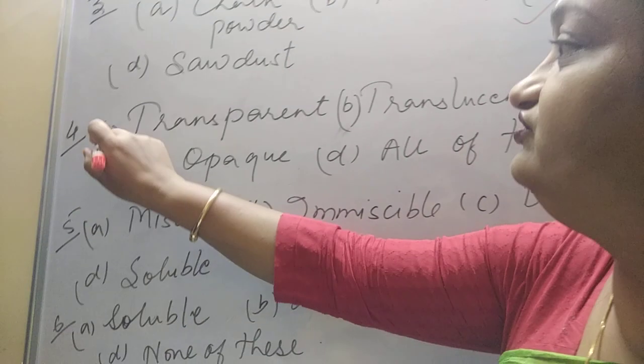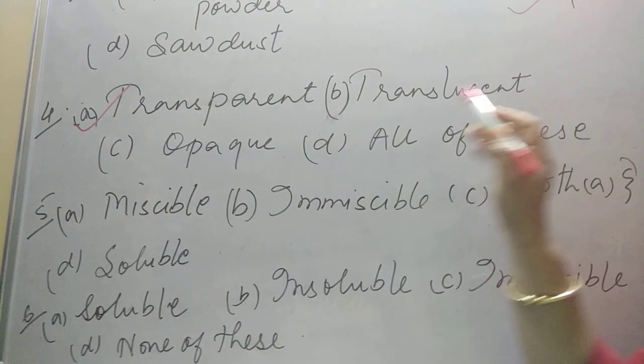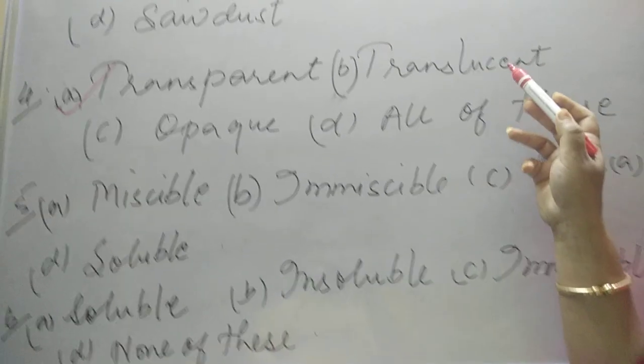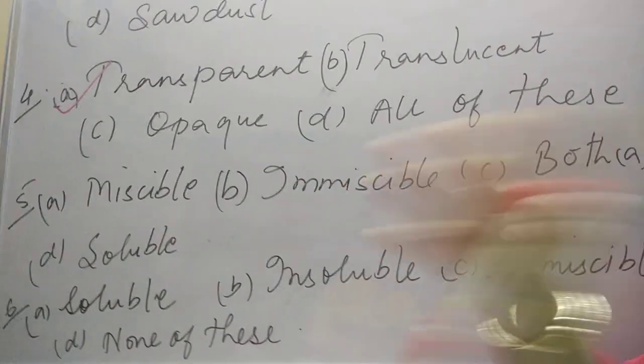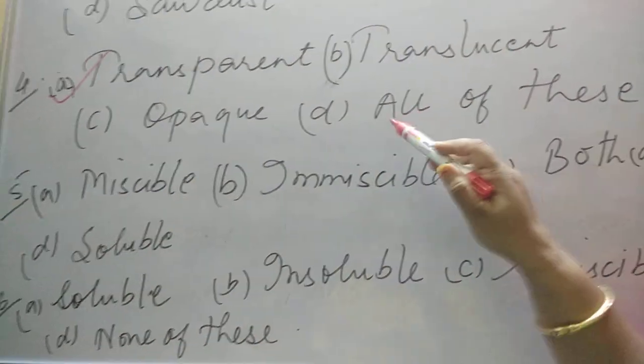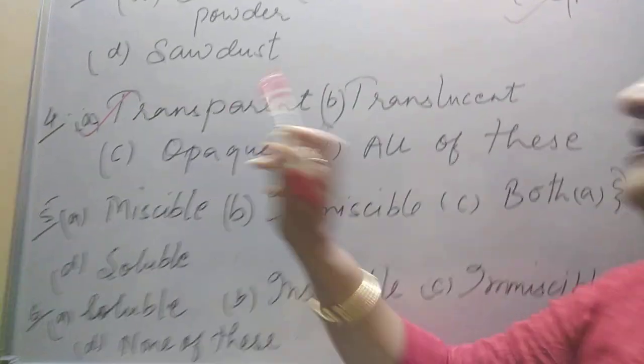So that he can completely drive properly on particular road. So the word should be transparent, not translucent, it is partially word, not opaque, that is cannot at all, cannot see on the other side, and it cannot be all of these. So the word should be transparent.